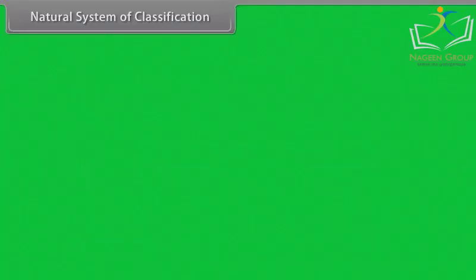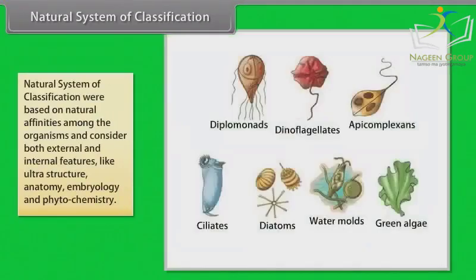Natural system of classification was based on natural affinities and considered both external and internal features like ultra-structure, anatomy, embryology, and phytochemistry.